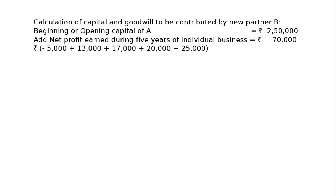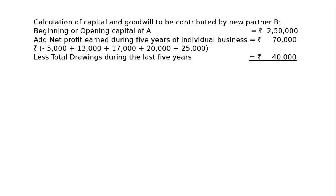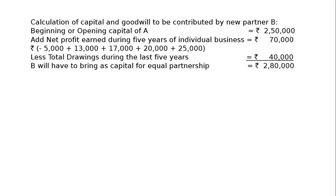Total profit is Rs. 70,000, excluding the loss — meaning the loss has already been deducted. The total drawings during the last 5 years by proprietor A is Rs. 40,000. And after 5 years, B will have to bring Rs. 2,80,000 as capital for equal partnership, because the capital of A is Rs. 2,80,000.